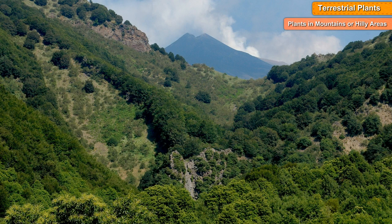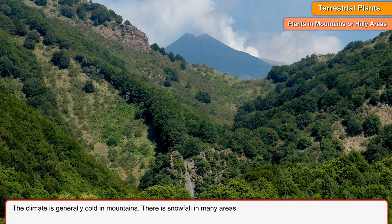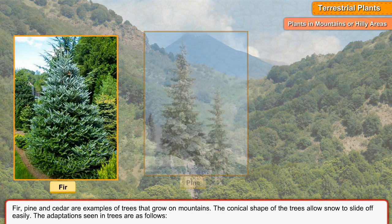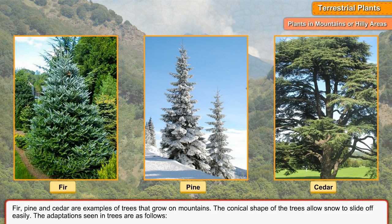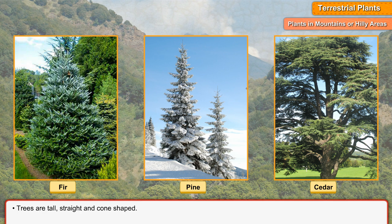Plants in Mountains or Hilly Areas. The climate is generally cold in mountains. There is snowfall in many areas. Fir, pine, and cedar are examples of trees that grow on mountains. The conical shape of the trees allows snow to slide off easily. Trees are tall, straight, and cone-shaped. A few trees have needle-like leaves. Most trees are evergreen.